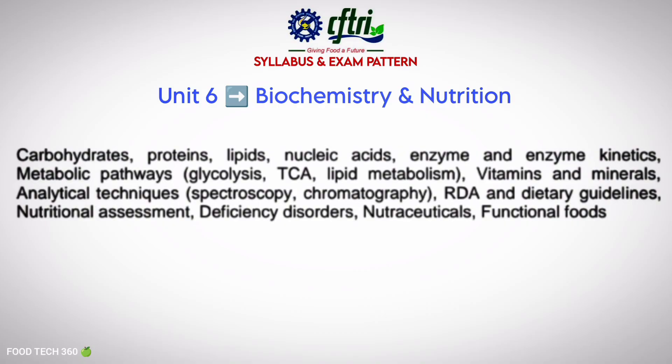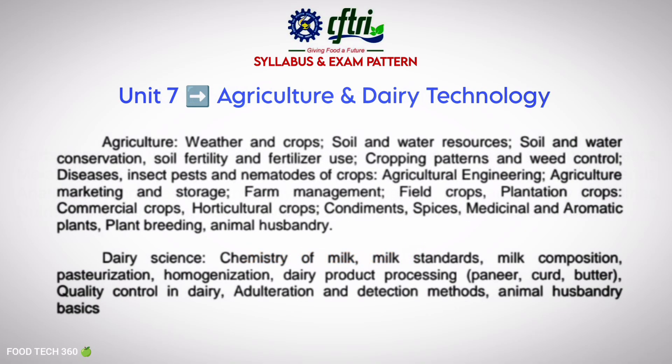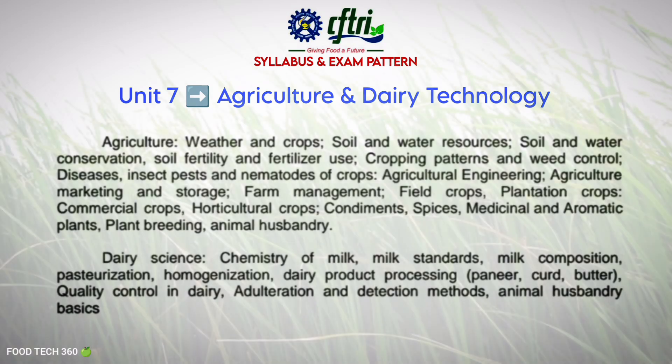Unit 6 is Biochemistry and Nutrition. To crack the questions from this unit, you should understand biomolecules, metabolism, enzyme kinetics, and nutrition science like RDA, deficiency diseases, and functional foods. Analytical techniques like spectroscopy are also important.